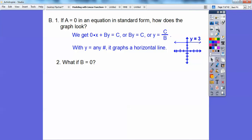And similarly, what if B equals zero? Well, if B equals zero, we get X equals some number, and that's a vertical line. And this is not a function. Vertical lines are not functions. Only non-vertical lines are functions. But if B equals zero, then it gives us a vertical line.